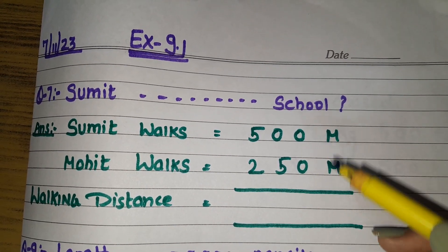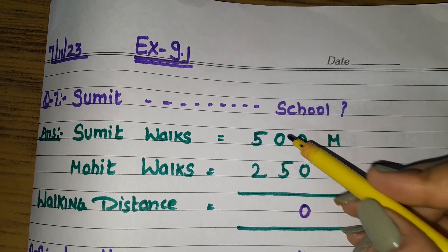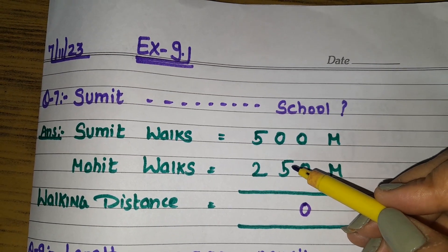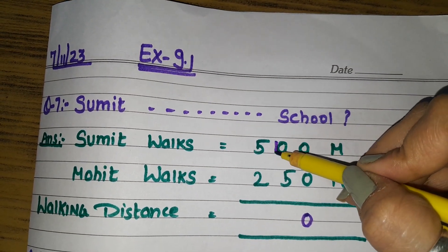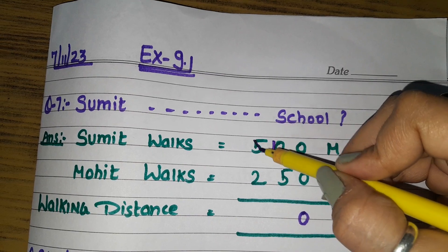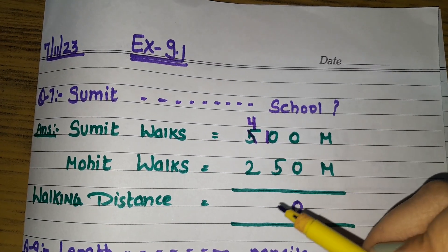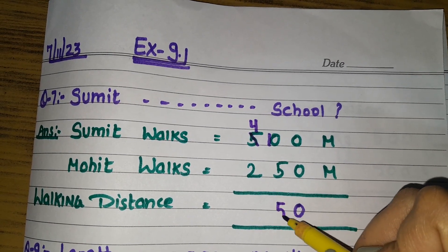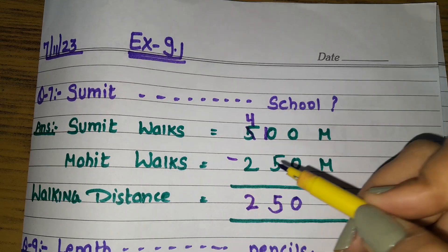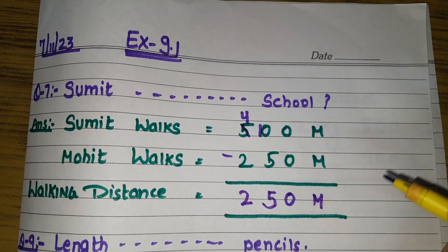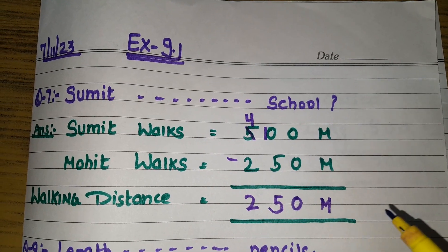Mohit's walking distance will be less. 0 minus 0 is 0. Now 0 minus 5 — we can't subtract 5 from 0, so we will borrow 1. The 5 becomes 4, and 10 minus 5 is 5. Then 4 minus 2 is 2. So the answer we got is 250 meters. Walking distance is 250 meters.